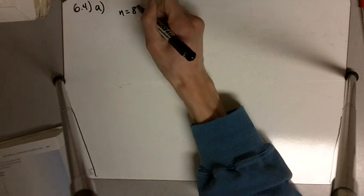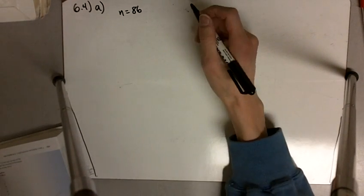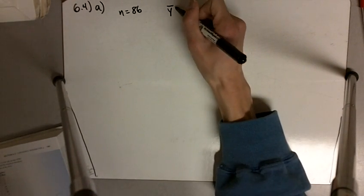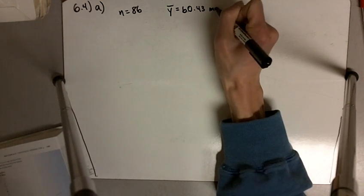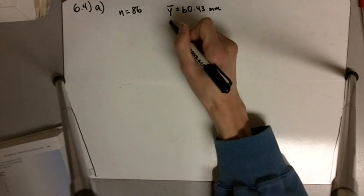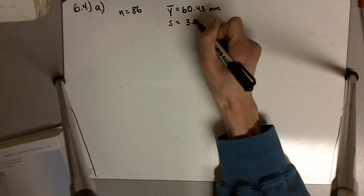So we have n equals 86, we've got 86 measurements. Our mean, y-bar, is 60.43 millimeters, and the standard deviation is 3.06.